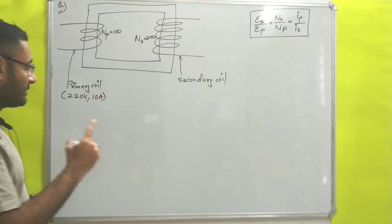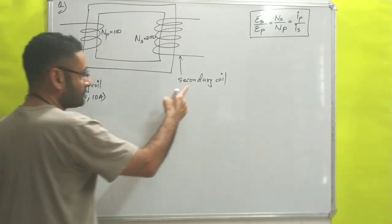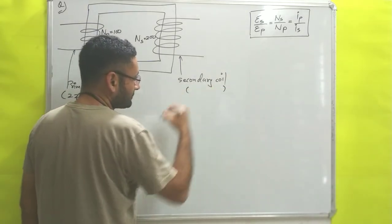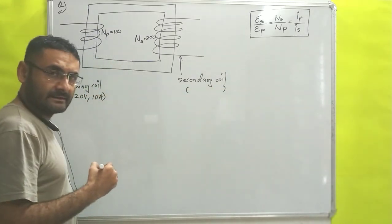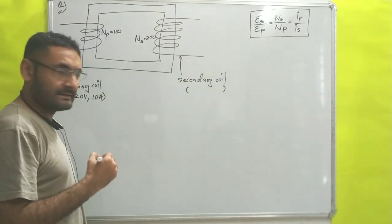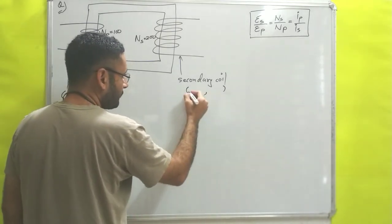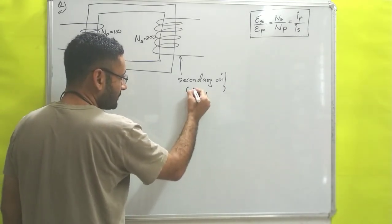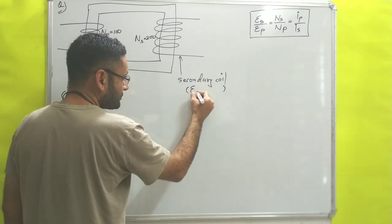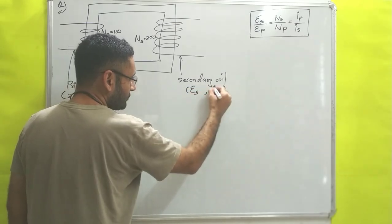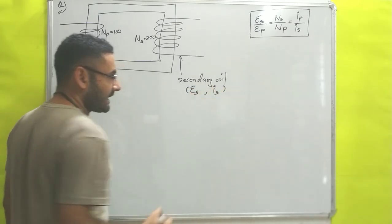You have to find out the output at the secondary side — that means you have to find out the output voltage ES and the output current IS.